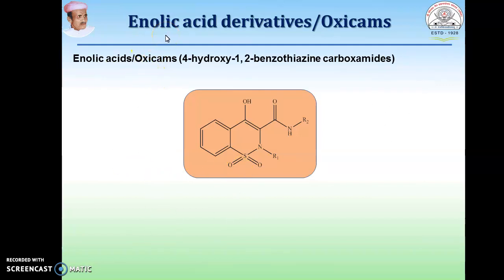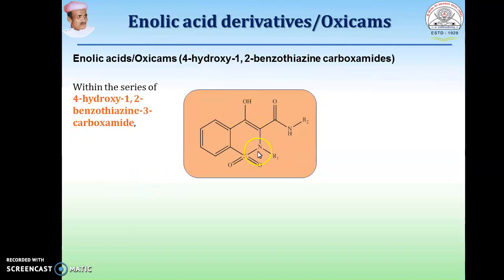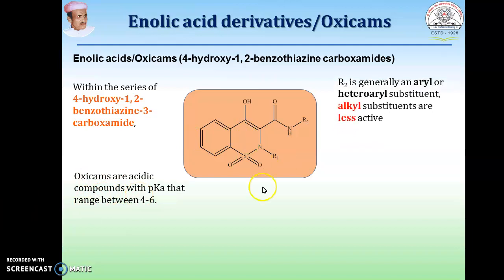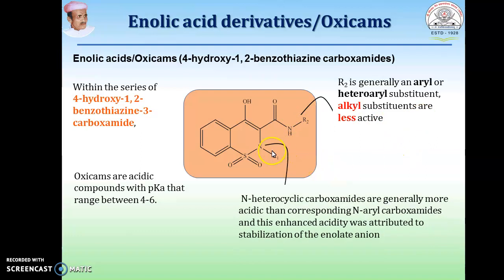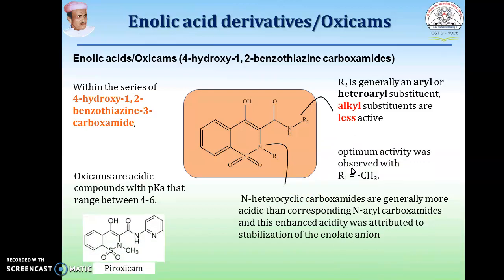Another series of NSAID analogs is enolic acid derivatives, also known as oxicams. Oxicams are also described as 4-hydroxy-1,2-benzothiazine-3-carboxamide. Oxicams are acidic compounds with pKa range between 4 to 6. The R2 group is generally an aryl or heterocyclic substitution for active compounds; alkyl substitution gives less active compounds. Some heterocyclic carboxamides will be more acidic, and increased acidity gives less active compounds. Example: piroxicam. Optimum activity is associated with the pyridyl ring system at R1, which gives more active compounds.